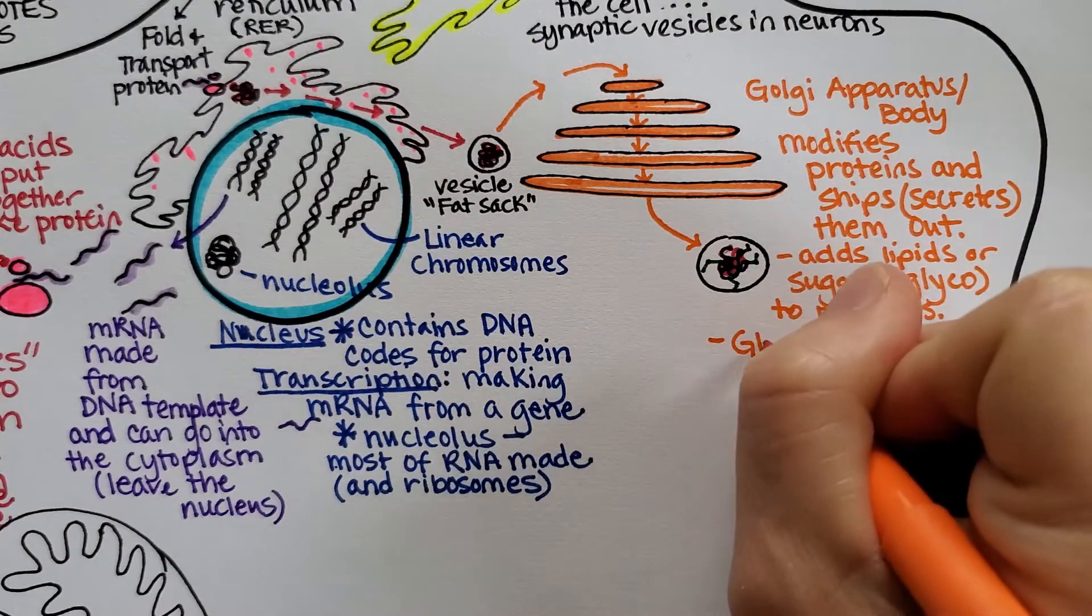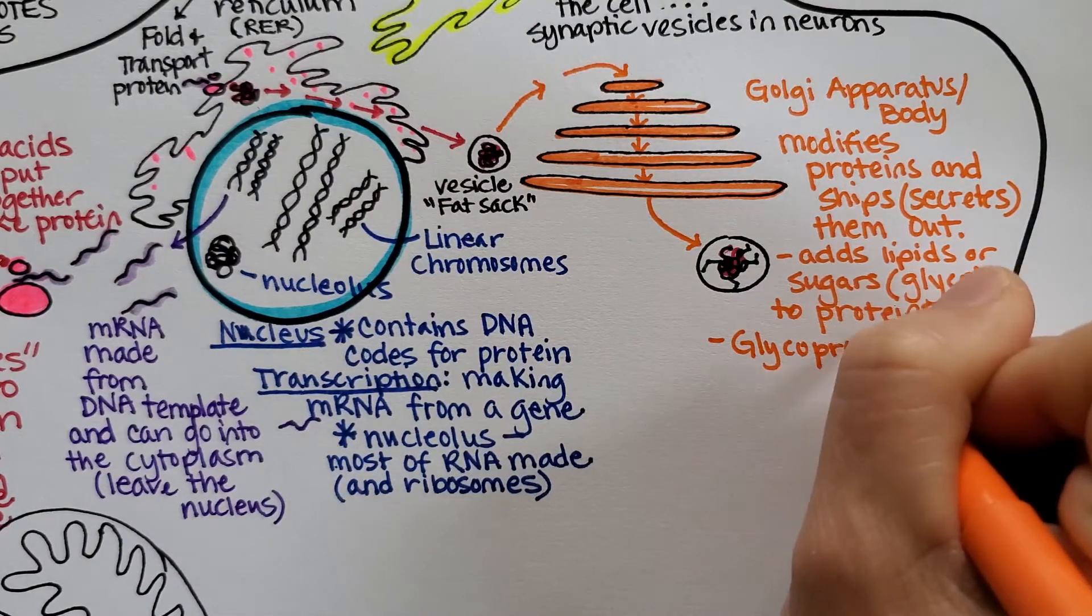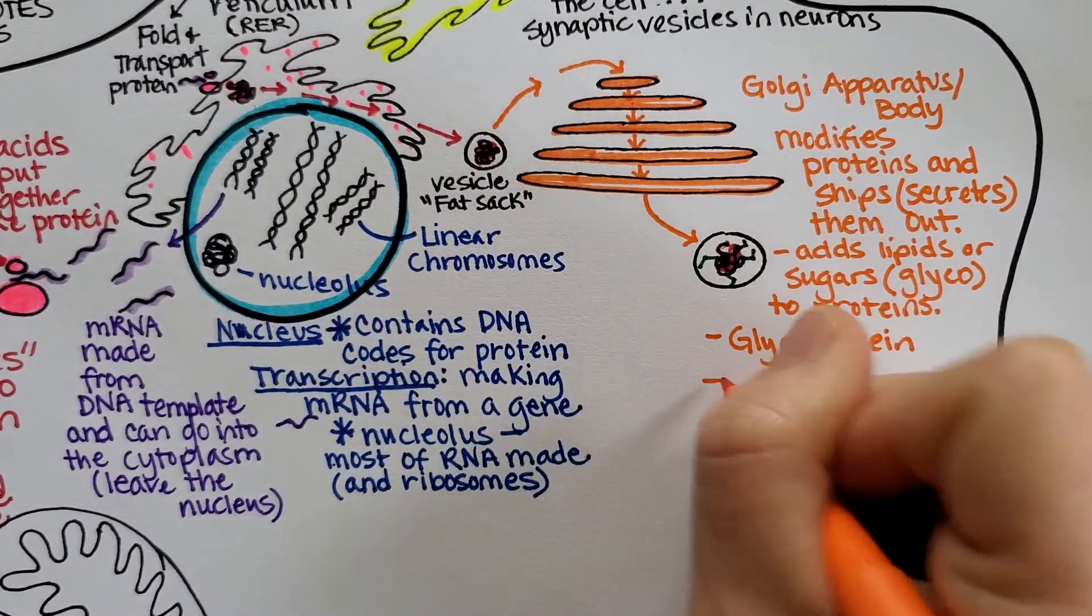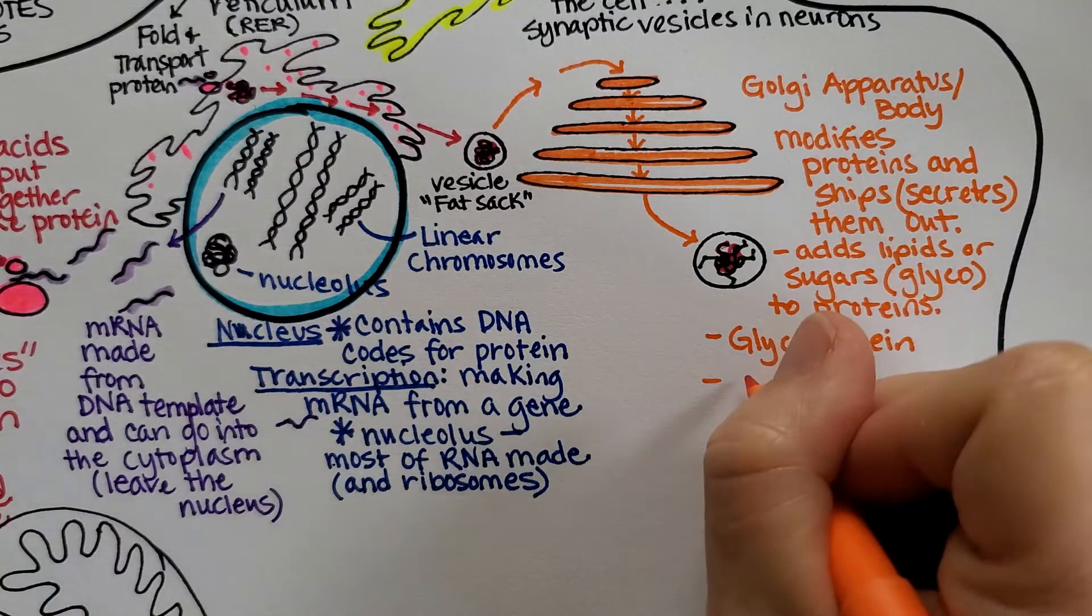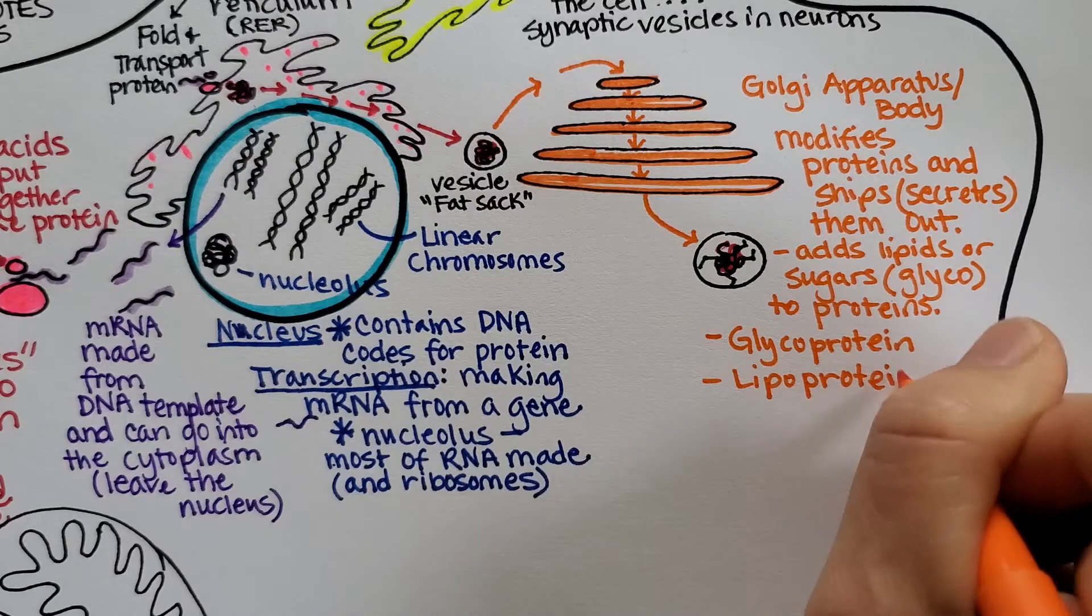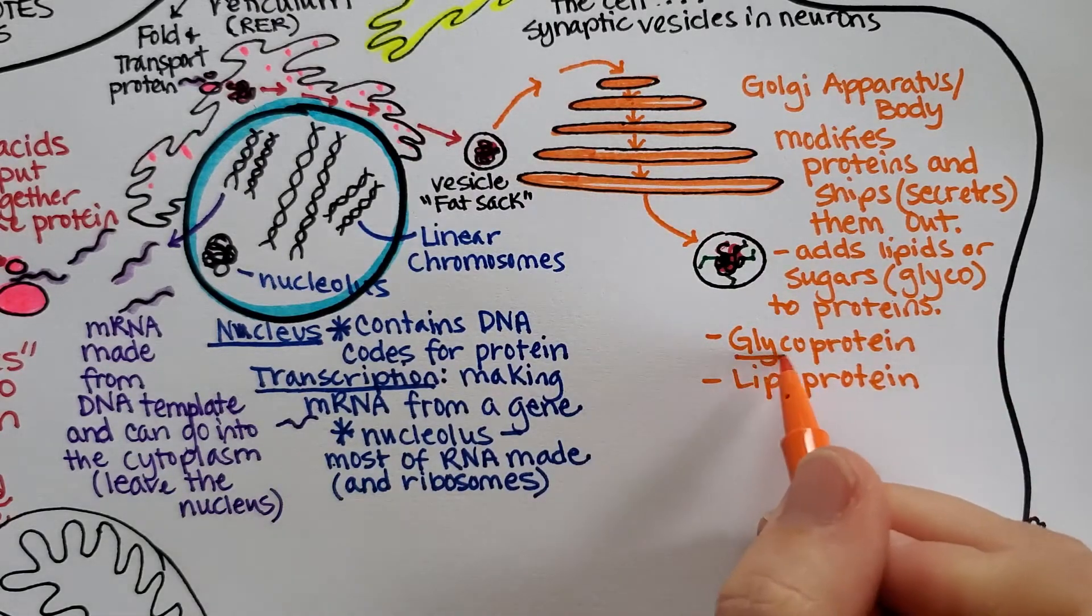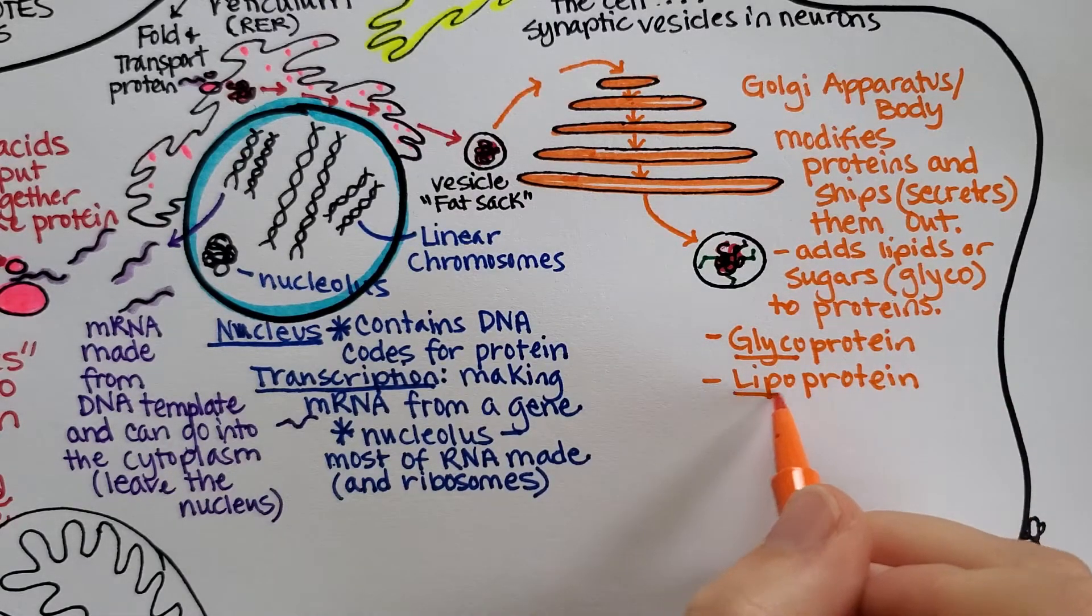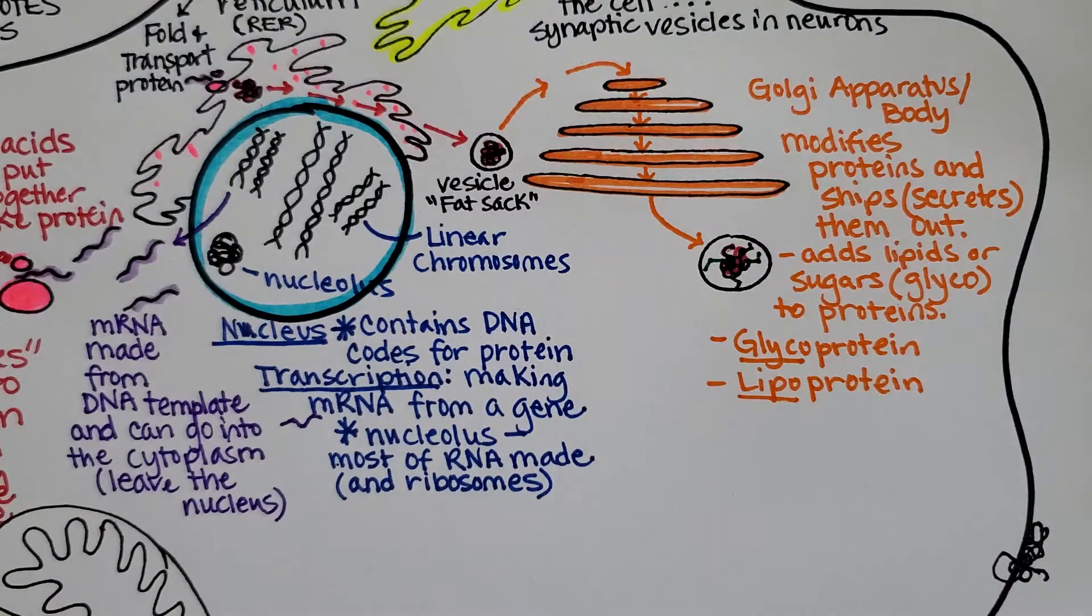If it gets a sugar added to it, we call it a glycoprotein. We're just about done with our little recap. So you might end up at the end of this with something called a glycoprotein, or you might end up with something called a lipoprotein. Whenever you add sugar to something, you call it a glyco and a fat, it would be called a lipoprotein.